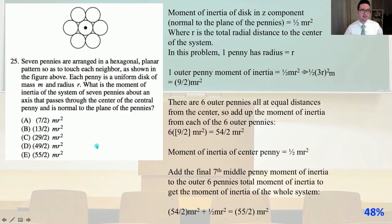Number 25. This is the most fun I've had with pennies, maybe ever. Number 25. 7 pennies are arranged in a hexagonal planar pattern so as to touch each neighbor as shown in the figure above. Each penny is a uniform disk of mass m and radius r. What is the moment of inertia of the system of 7 pennies about an axis that passes through the center of the central penny and is normal to the plane of the pennies? The moment of inertia of a disk in the z component normal to the plane of the pennies is 1.5 mr squared, where r is the total radial distance to the center of the system. In this problem, 1 penny has a radius equal to r.